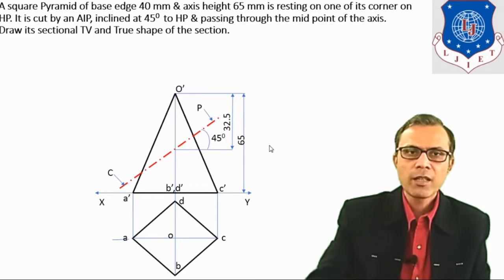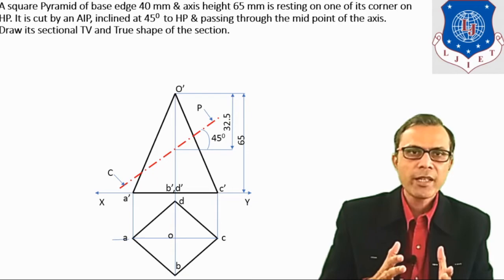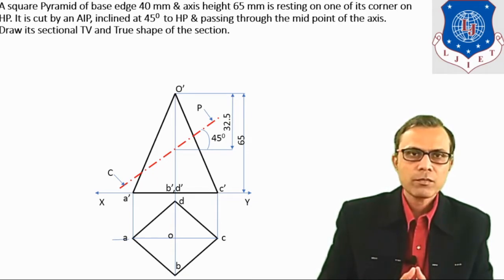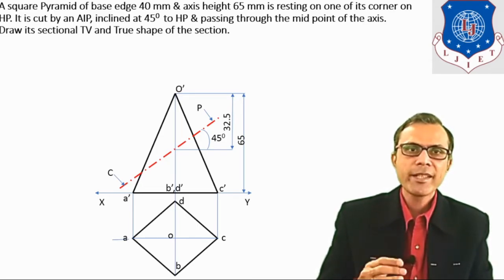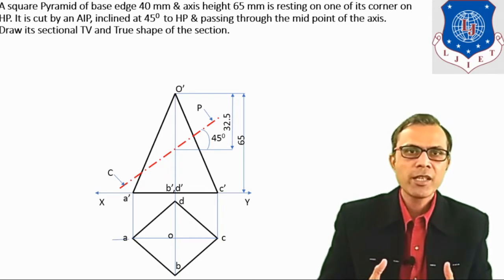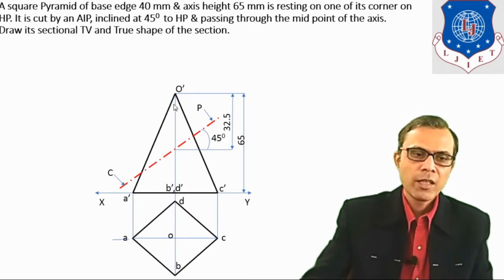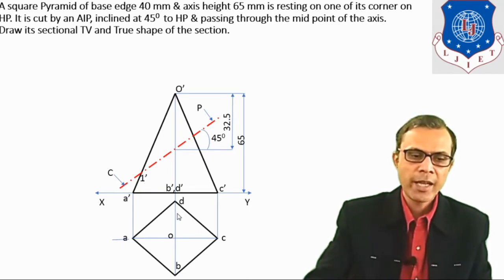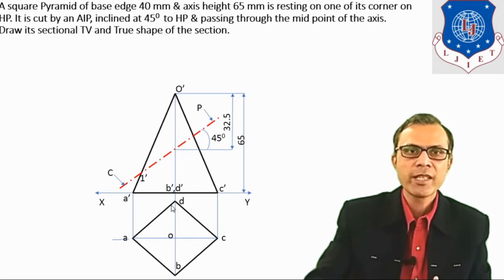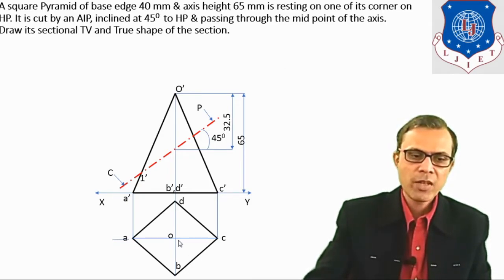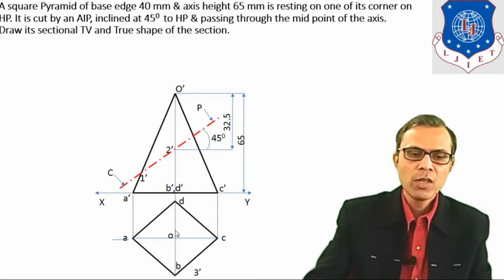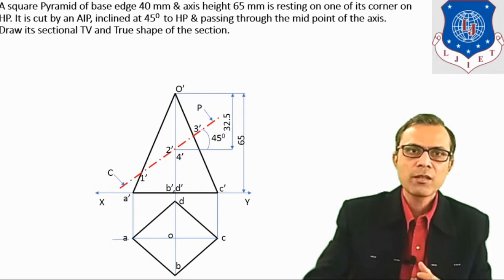Now we have to locate the cutting points where the object is cut by this cutting plane. All four slant edges — OA, OB, OC, and OD — are cut by the cutting plane. OA edge is cut at point number 1, OB edge at point number 2, OC edge at point number 3, and OD edge at point number 4. All four cutting points are now located.